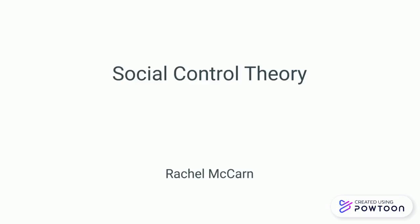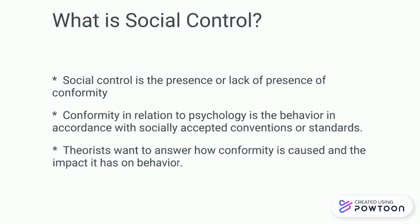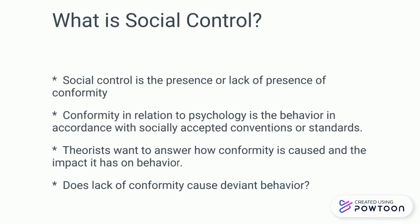Social control theory. What is social control? Social control is a presence or lack of presence of conformity. Conformity in relation to psychology is defined as the behavior in accordance with socially accepted conventions or standards. Theorists want to answer how conformity is caused and the impact it has on behavior. Does lack of conformity cause deviant behavior?